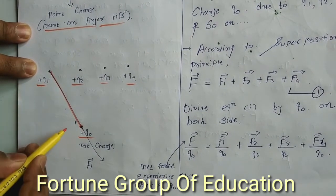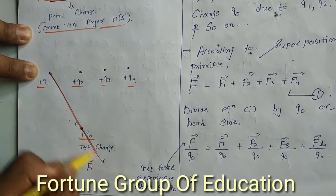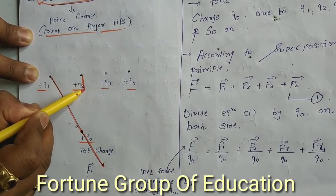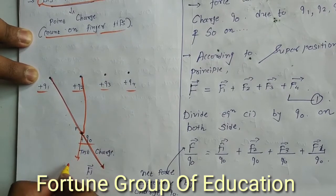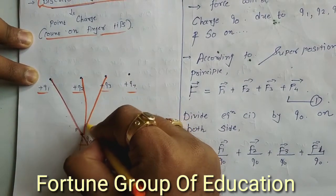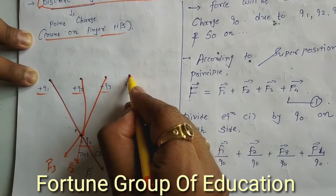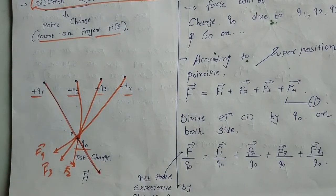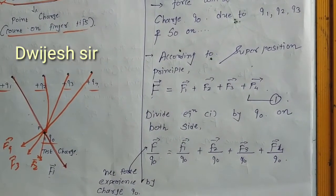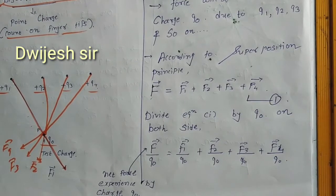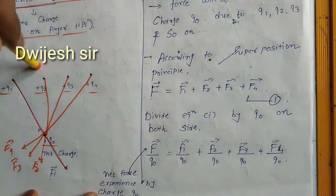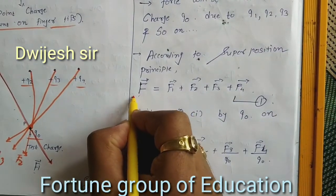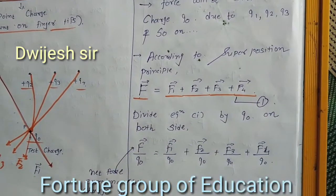The force exerted on charge q0 due to q1 — since both charges are positive — acts in the opposite direction, called F1. Due to q2 the force is F2, due to q3 the force is F3, and due to q4 the force is F4. According to the principle of superposition, the net force experienced by q0 is the algebraic addition of all forces: F = F1 + F2 + F3 + F4.